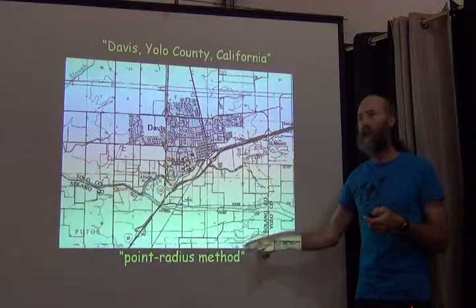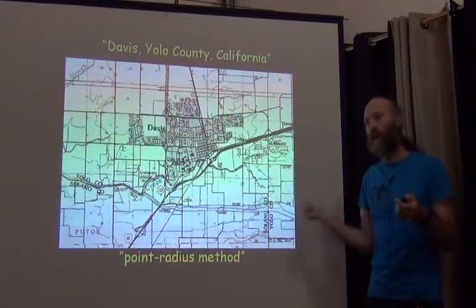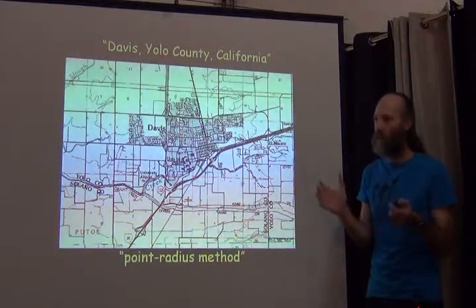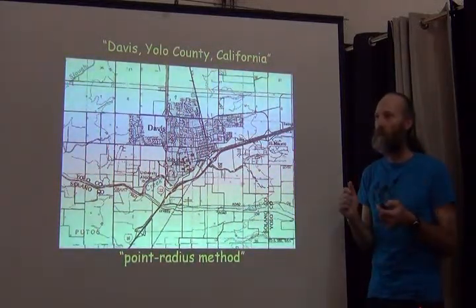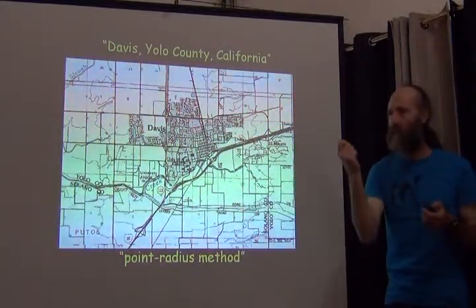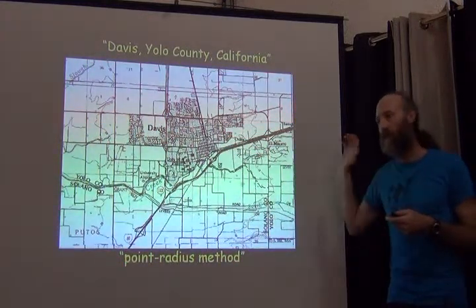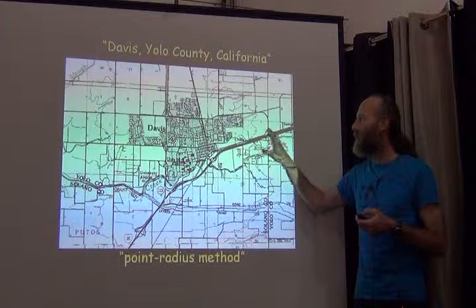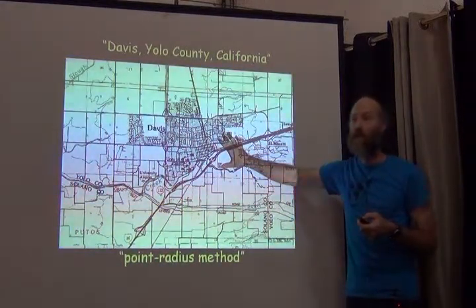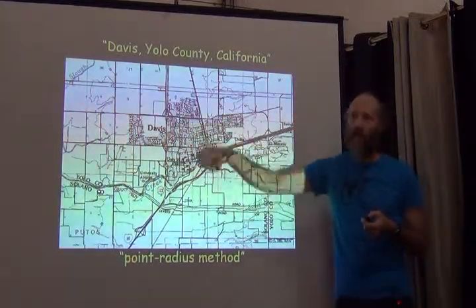The radius for that circle tells us something about how uncertain we are. The bigger the radius, the more uncertain we are. The smaller the radius, the more specific we are. A georeference that's very specific, one that comes from a GPS, would be a very small circle. One that comes from a georeferencing process where the only thing the locality says is 'Davis' would have to be big enough to include the entire town.